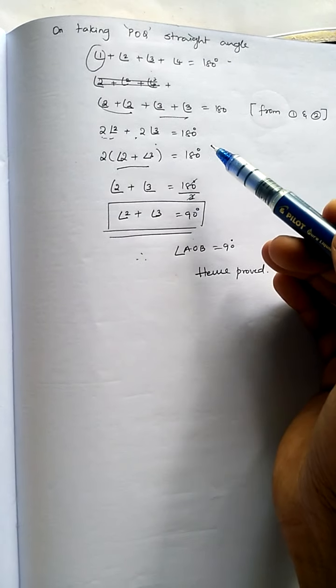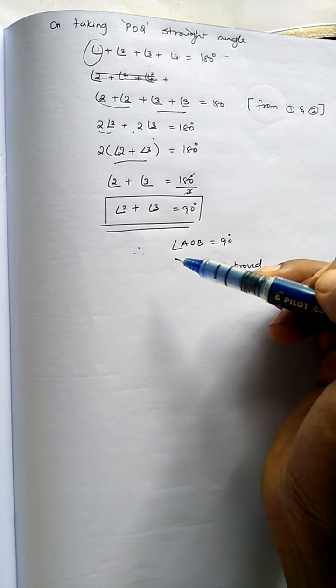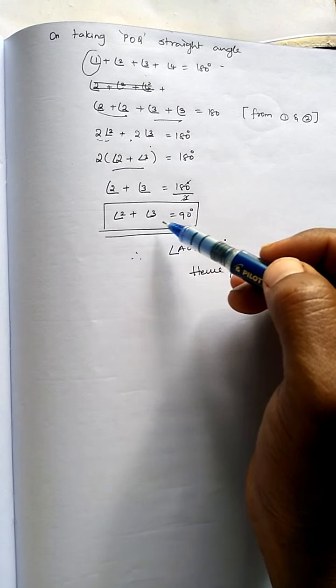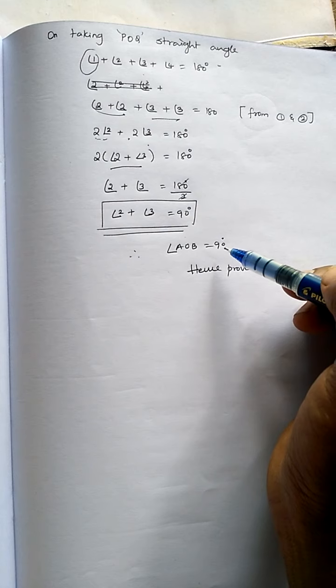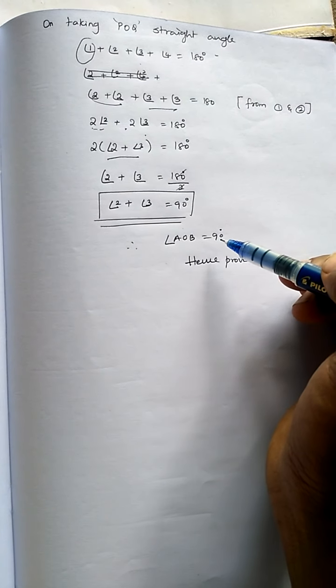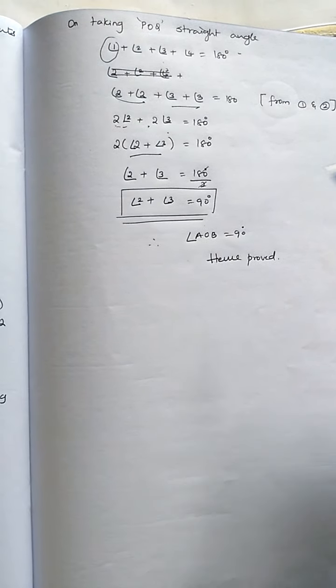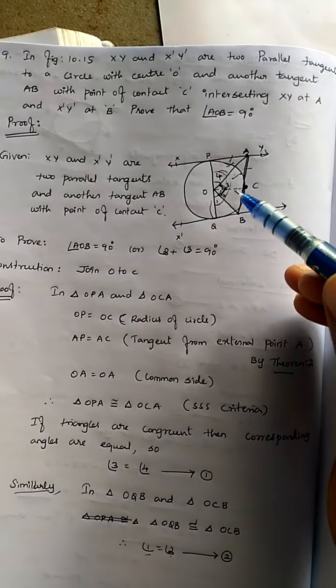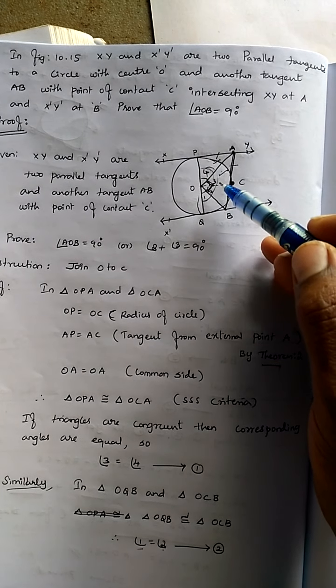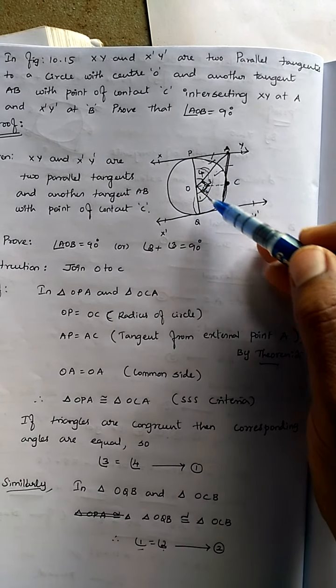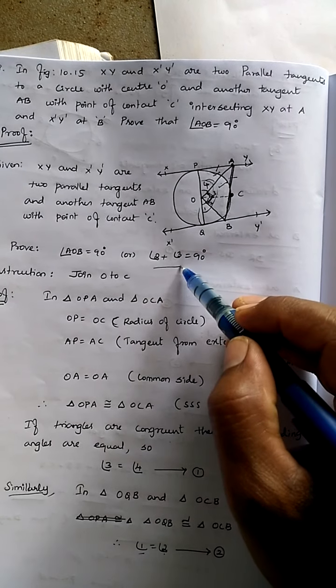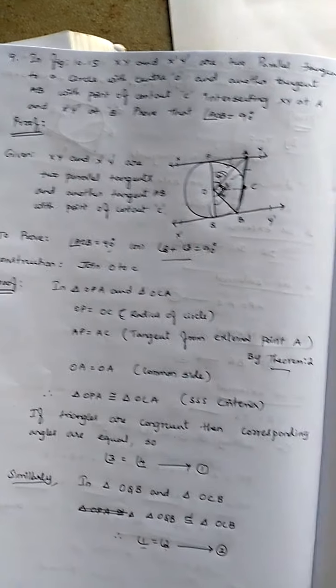Taking 2 common outside, angle 2 plus angle 3 equals 90 degrees. Therefore, angle AOB equals 90 degrees. In the diagram, angles 2 and 3 represent angle AOB, so this is proved.